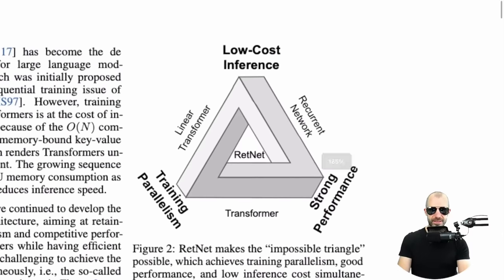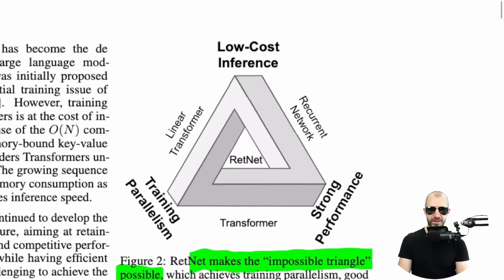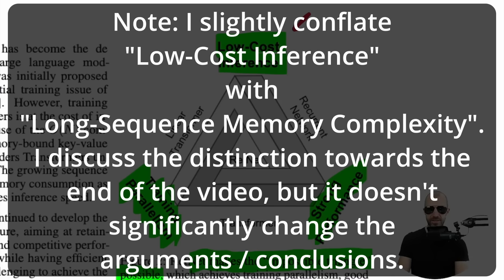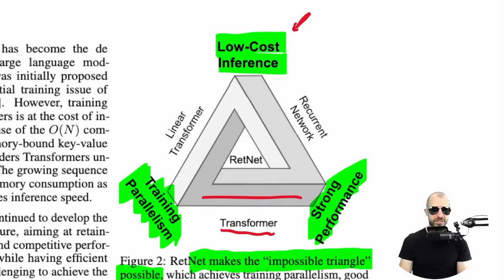Diving into the paper — it presents this triangle. They say RetNet makes the impossible triangle possible. The impossible triangle being low cost inference, training parallelism, and strong performance. Low cost inference means I can run inference without incurring a quadratic explosion of memory. With a transformer, as my sequence length grows, I'm going to need a quadratic amount of memory to run inference. In some form, you're always going to pay to run that inference because the transformer has attention from every token to every other token using that softmax on top.